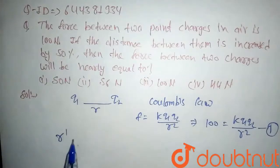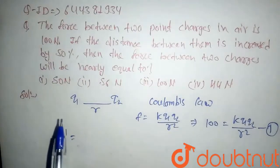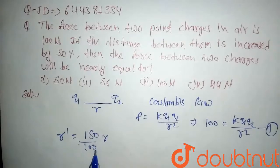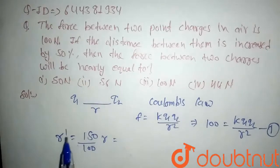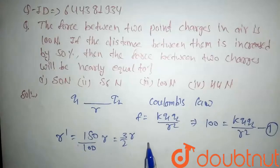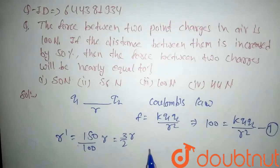The new distance is increased by 50% of initial distance, so it will be 150 upon 100 of initial distance. So our new distance will be three by two into r. By Coulomb's law again, we will apply.